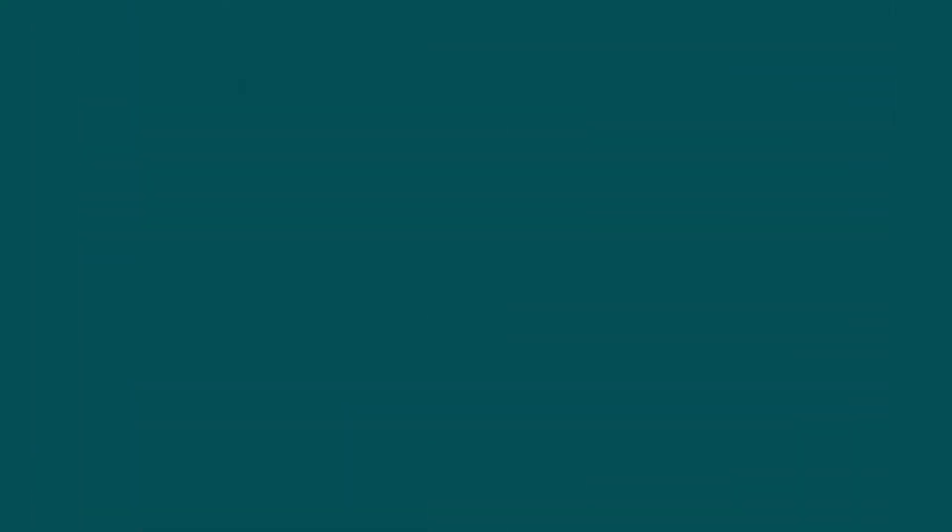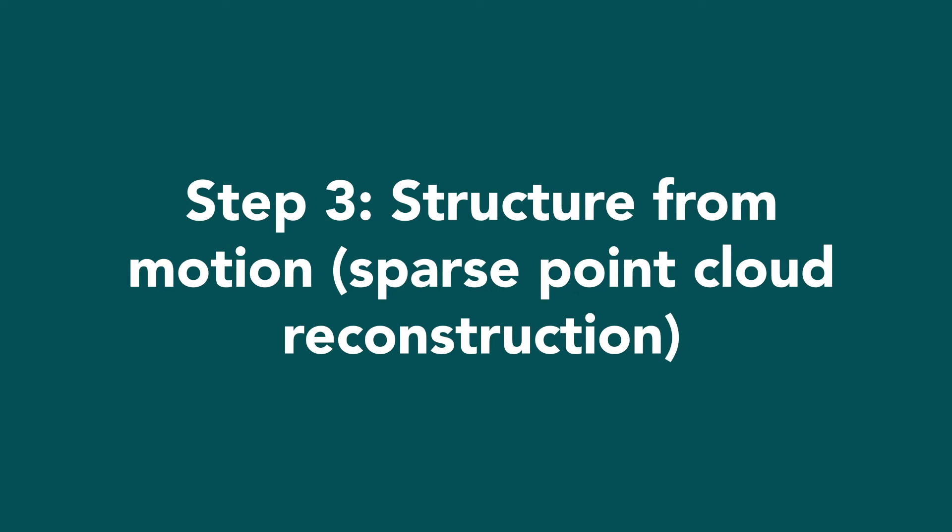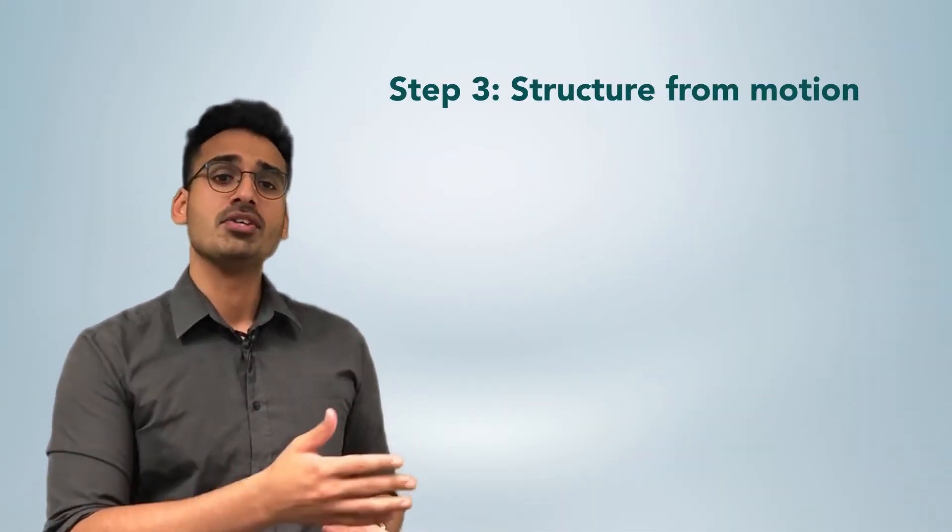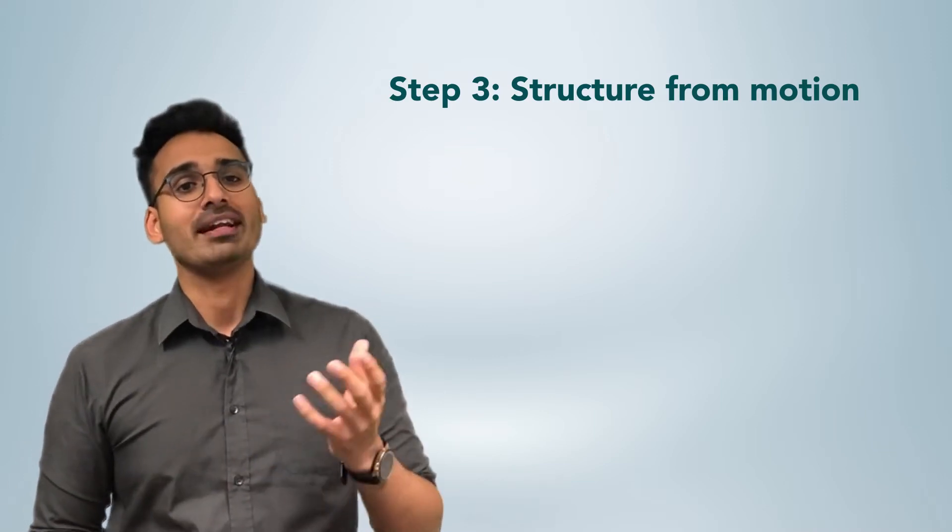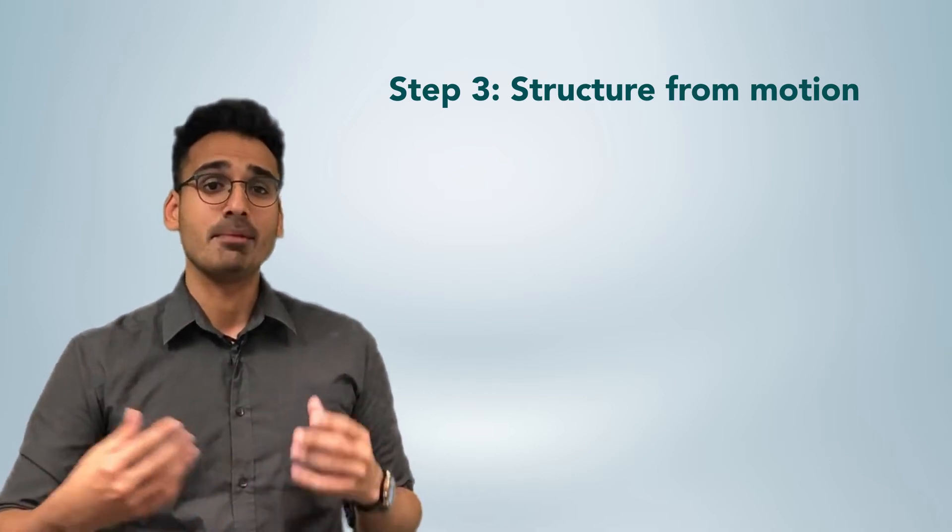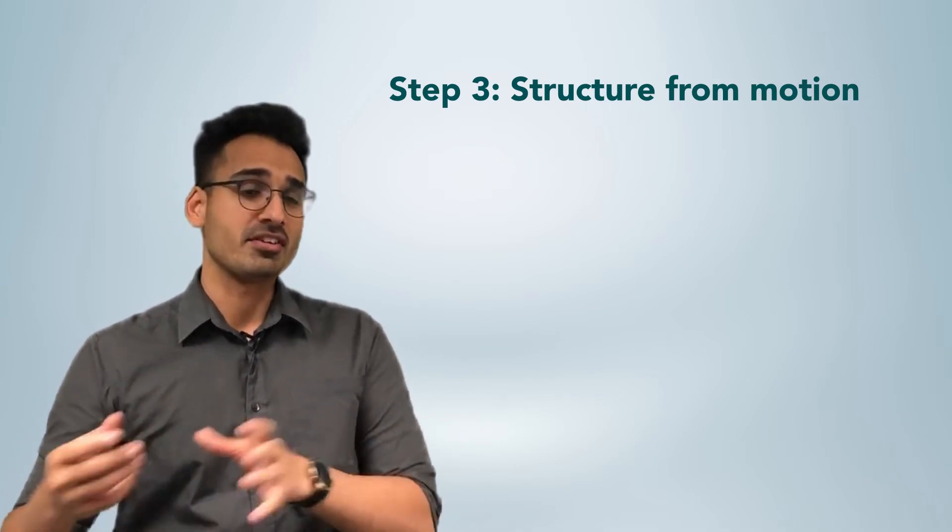Step 3 in the data pipeline is something called structure from motion, or sparse point reconstruction. The goal of this step for the software is to reconstruct a 3D point cloud from the 2D points. A 3D point cloud is basically a set of points with estimated pose, which is essentially a combination of position and orientation information attached to every point.